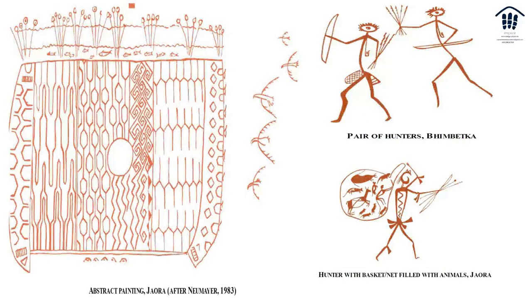One of the most interesting paintings is an abstract painting from Jawara. It seems to show a swamp or various kinds of sediments and different types of soils — highly abstract. Then there is a pair of hunters at Bhimbetka, and a hunter with a basket net filled with animals, telling us that men at that time hunted many different types of animals.